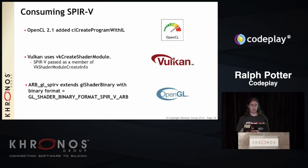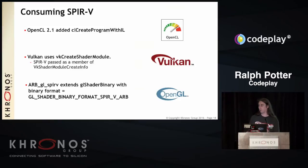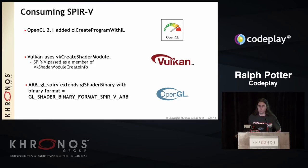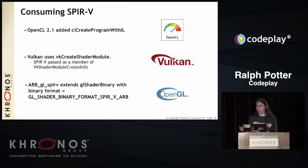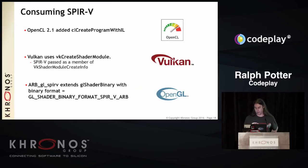To consume SPIR-V, each of the three APIs has its own entry points. In OpenCL 2.1, there's clCreateProgramWithIL, working similarly to createProgramWithBinary or createProgramWithSource — you just pass the binary form of a SPIR-V module and get back a CL program. Vulkan has its own entry points; the createShaderModule function takes a struct with a member where you plug in your binary SPIR-V module. For GL, the glShaderBinary function has been extended with a new binary format flag indicating the blob is SPIR-V.